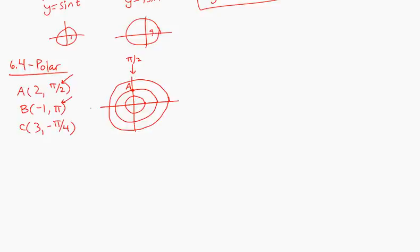We go in the direction of π, which is here, and because it's a negative 1, instead of going in the direction of π, I'm going to go backwards, so I'm going to go away from π. Here, we're going to go in the direction of -π/4, which is this way. And I'm going to go 3 units, 1, 2, 3, towards that angle. That's B, and that's C.